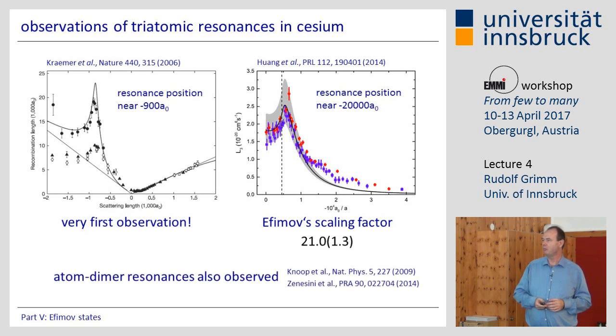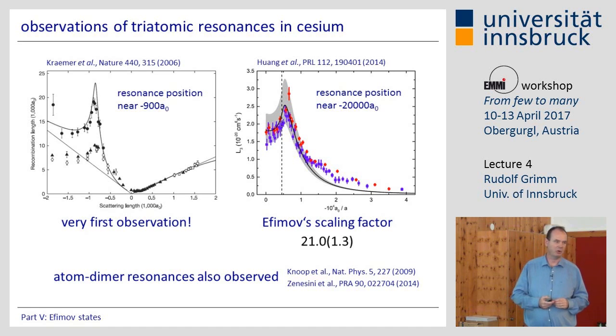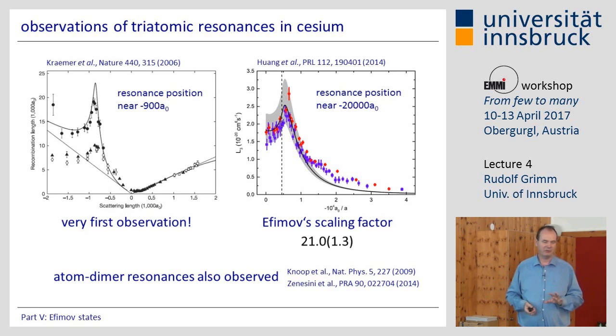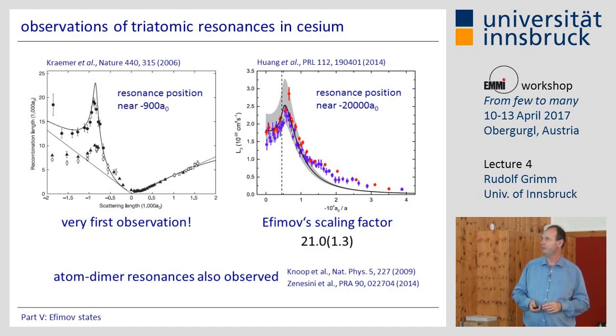We believe this slight deviation from 22.7 is not just random — it has physics in it. The lowest resonance is perhaps a factor of 9 higher than the Van der Waals range, but there are still corrections, and we think there is real physics in this small deviation. We also observed the atom-dimer resonance in various experiments, though the physics there is more complicated because you have to know exactly the character of the molecular state.